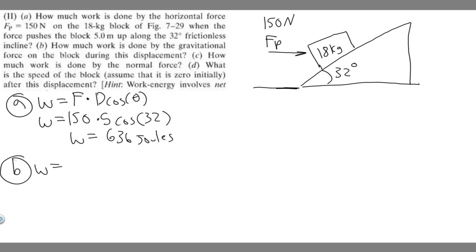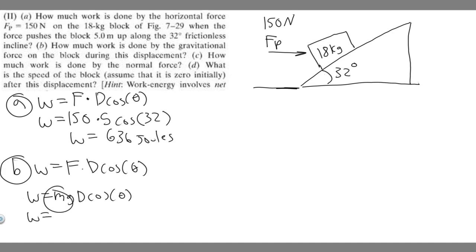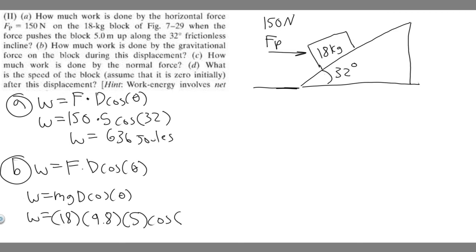Moving on to B, using the same formula: force times distance times the cosine of theta. For gravity, the force is mg — so 18 kilograms times 9.8 — times the distance of 5 meters. Now the angle: gravity points straight down, but the block is moving up the incline. The angle between vertical down and the incline direction is 90 degrees plus 32 degrees, giving us 122 degrees.